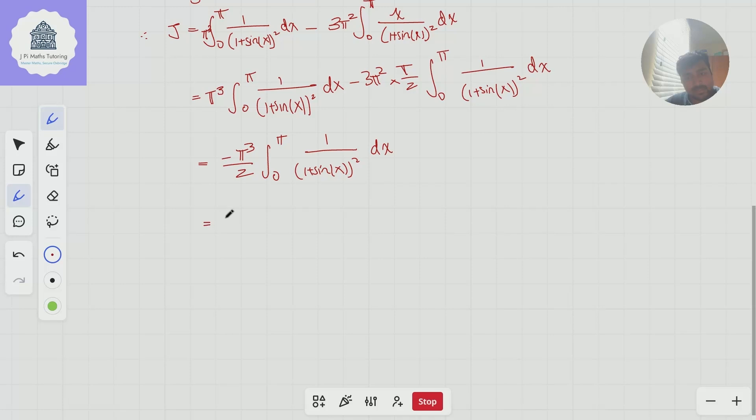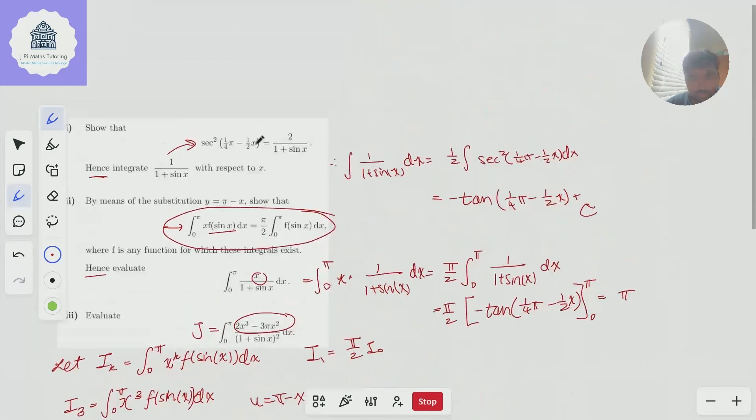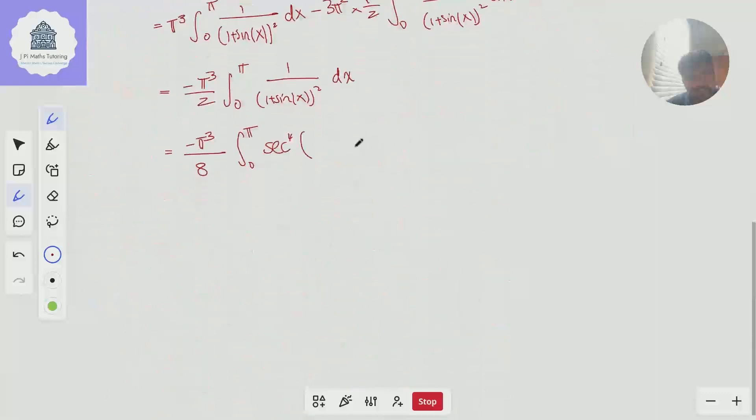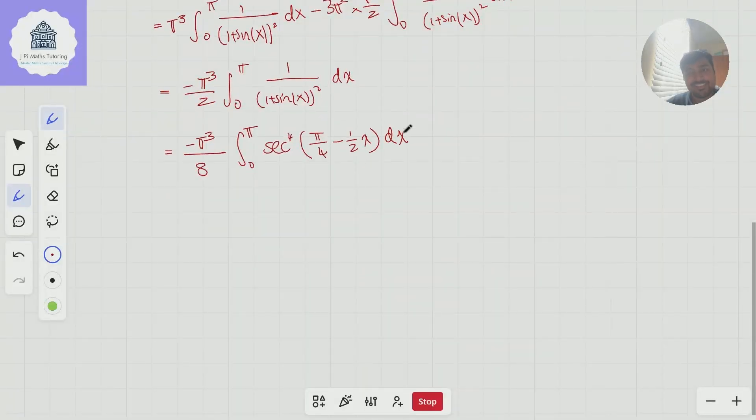So this should work out quite nicely. So this is going to equal minus π cubed over 8, so if I bring out that factor of 4, times the integral from 0 to π of sec to the 4, pi over 4 minus a half x dx. Another question is, how do we deal with this? And so before I do the trig identity stuff, I'm just going to make this a little bit nicer.